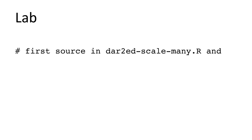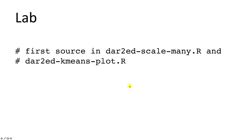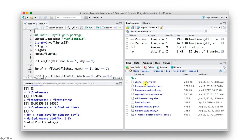Let's look at how this works with our R code. Because we are going to scale the data, I've provided a convenience function called dar2ed.scale.many.r. If you downloaded and installed the code for the book, you will have this function already. You need to source in this function, and also another function called dar2ed.kmeans.plot, which generates the elbow graph we spoke about.